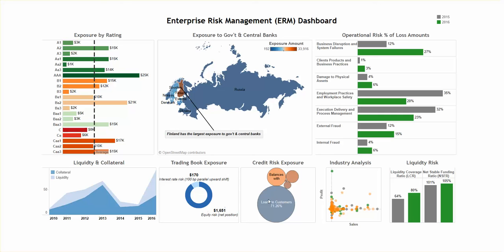The Credit Risk Exposure is a bubble chart that highlights the types of loans that have the largest exposure by percentage of total for the portfolio.